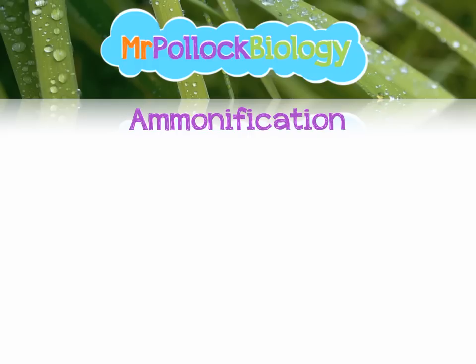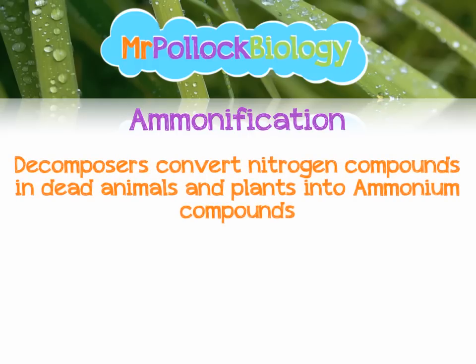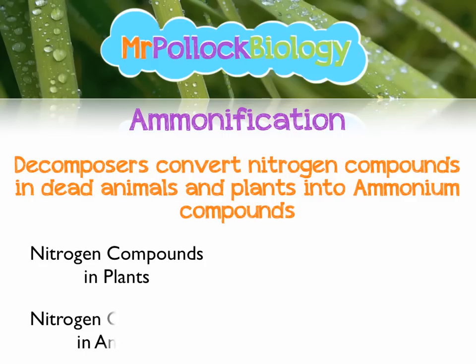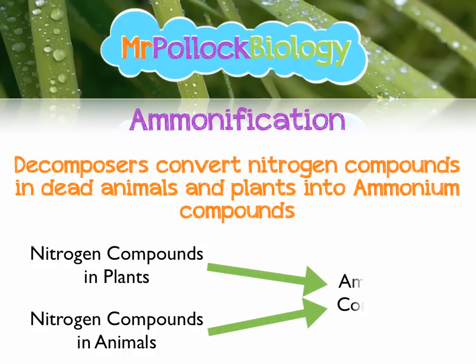The next stage is ammonification, and this is pretty straightforward. This is where decomposers convert the nitrogen compounds from dead animals and plants into ammonium compounds. As stuff dies, decomposers get going and convert all of those nitrogen compounds — like proteins and urea — into ammonium compounds. I should add that nitrogen compounds in plants can also be transferred to nitrogen compounds in animals through feeding, which is simply where plants are eaten by animals.